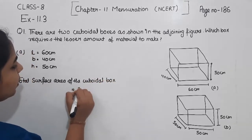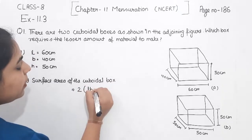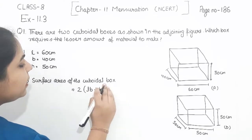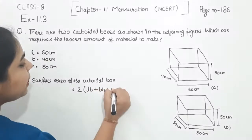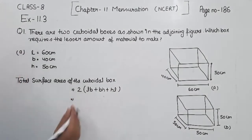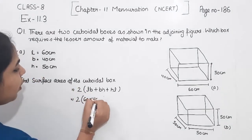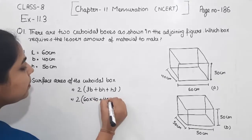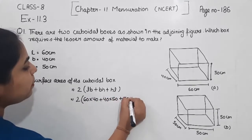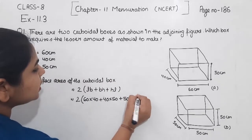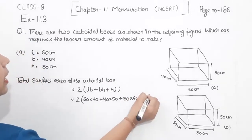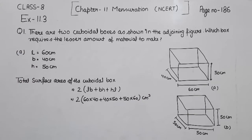The formula we know is: 2 multiplied by (L×B + B×H + H×L), that is length multiplied by breadth, plus breadth multiplied by height, plus height multiplied by length. Now putting in the values: 2 × (60×40 + 40×50 + 50×60) centimetres squared.